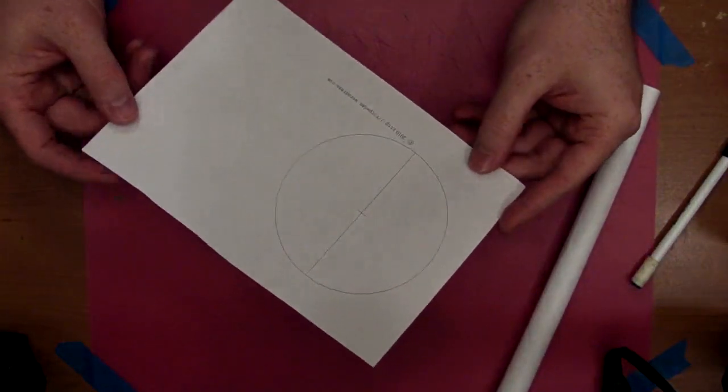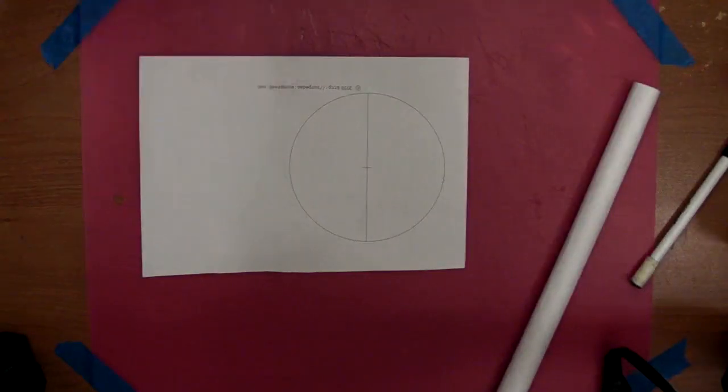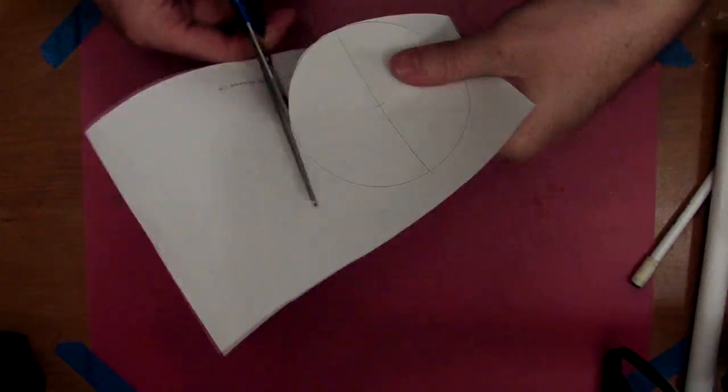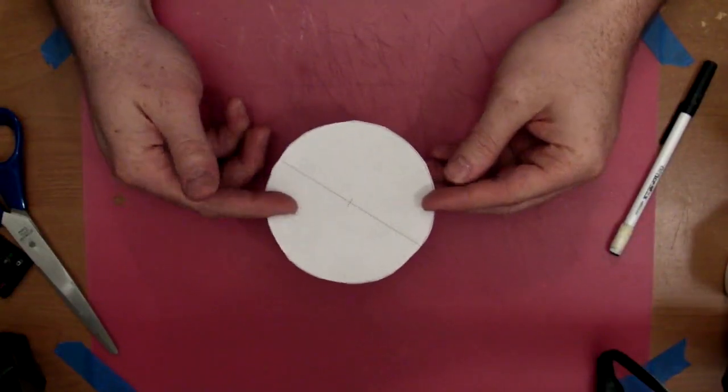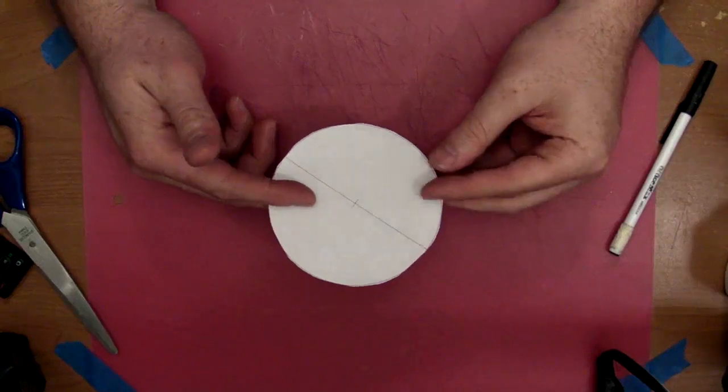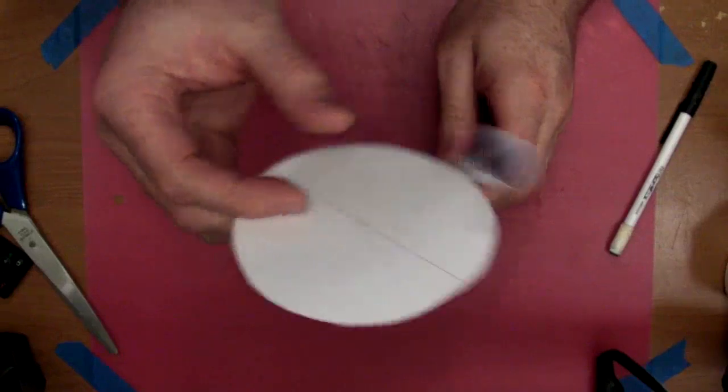For the rockets that I give tutorials for I'll actually give a template. So the first thing I'm going to do is cut out my circle. The size of the circle depends on how long you want your nose cone to be and how wide the body of the rocket is.